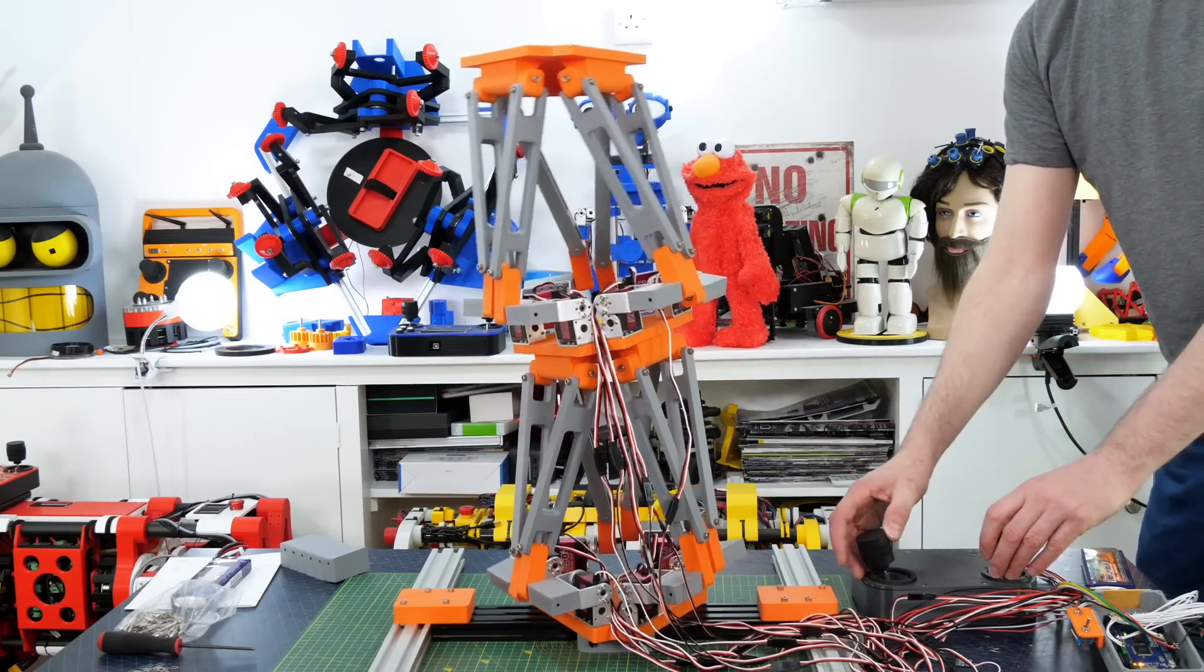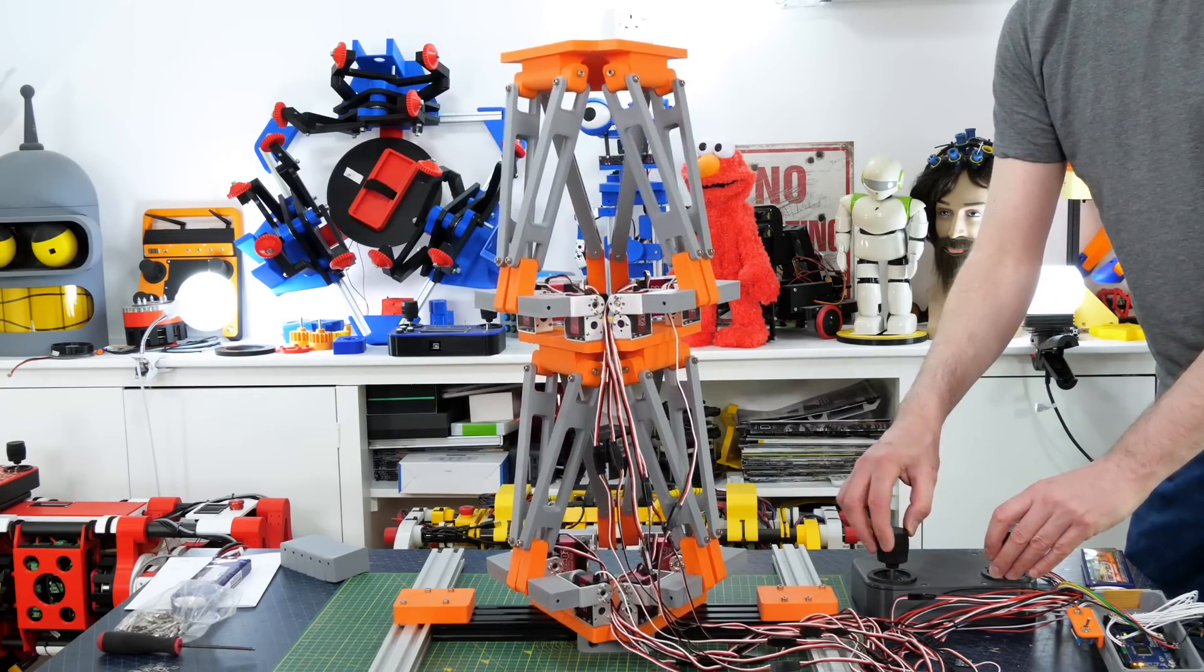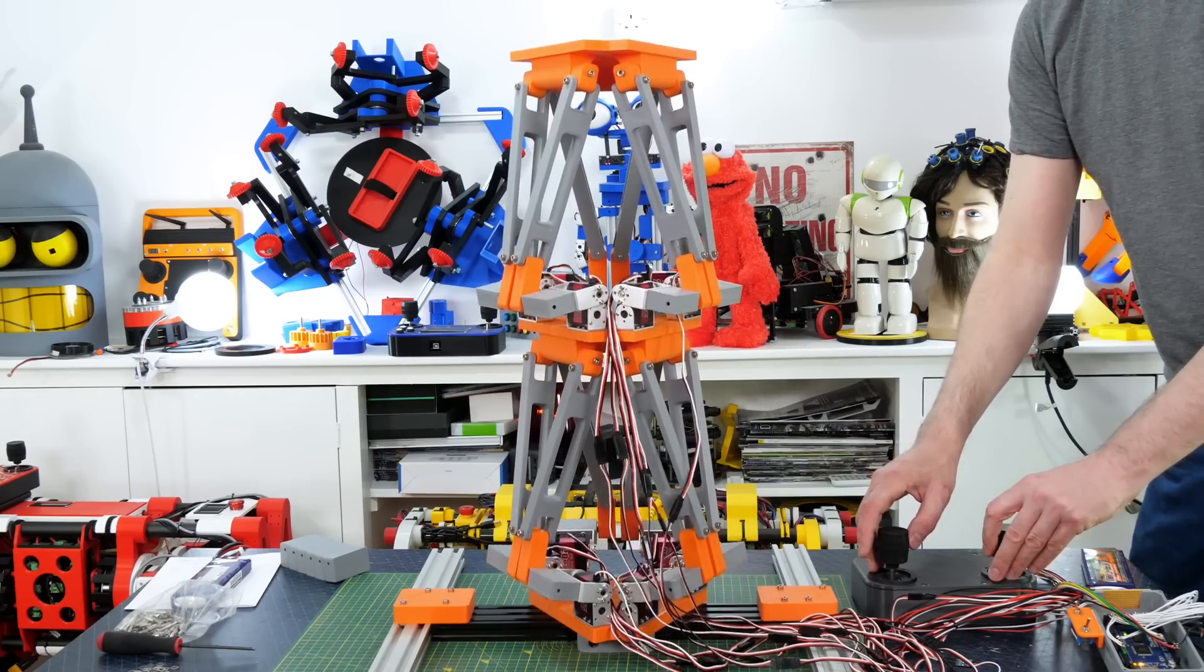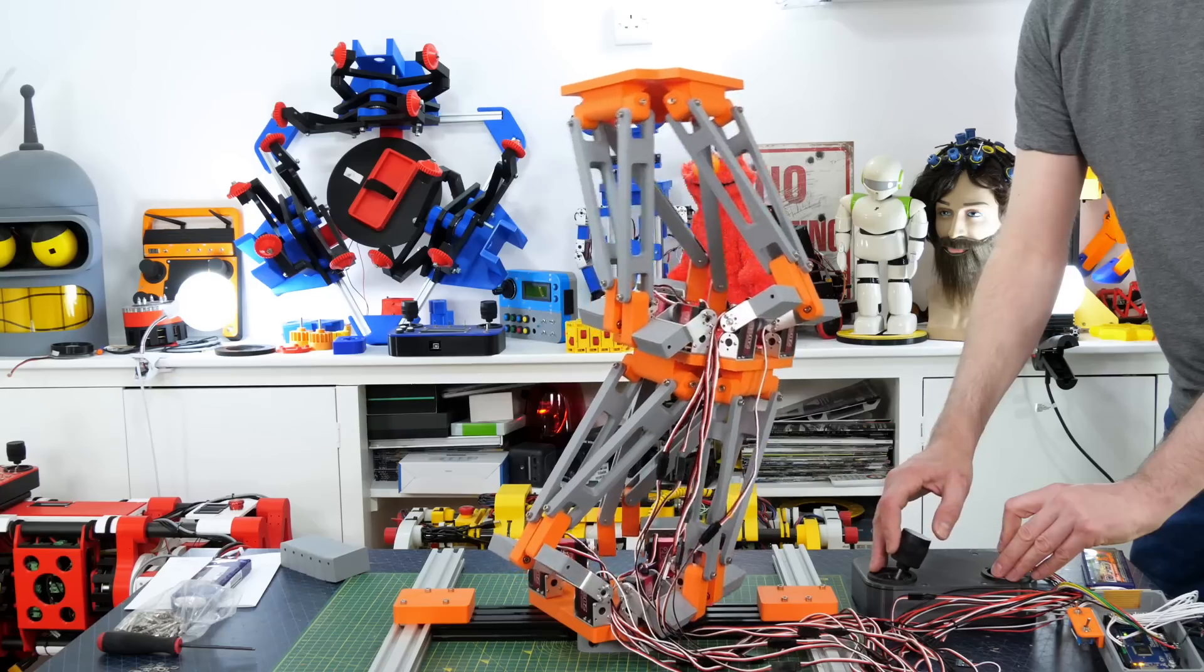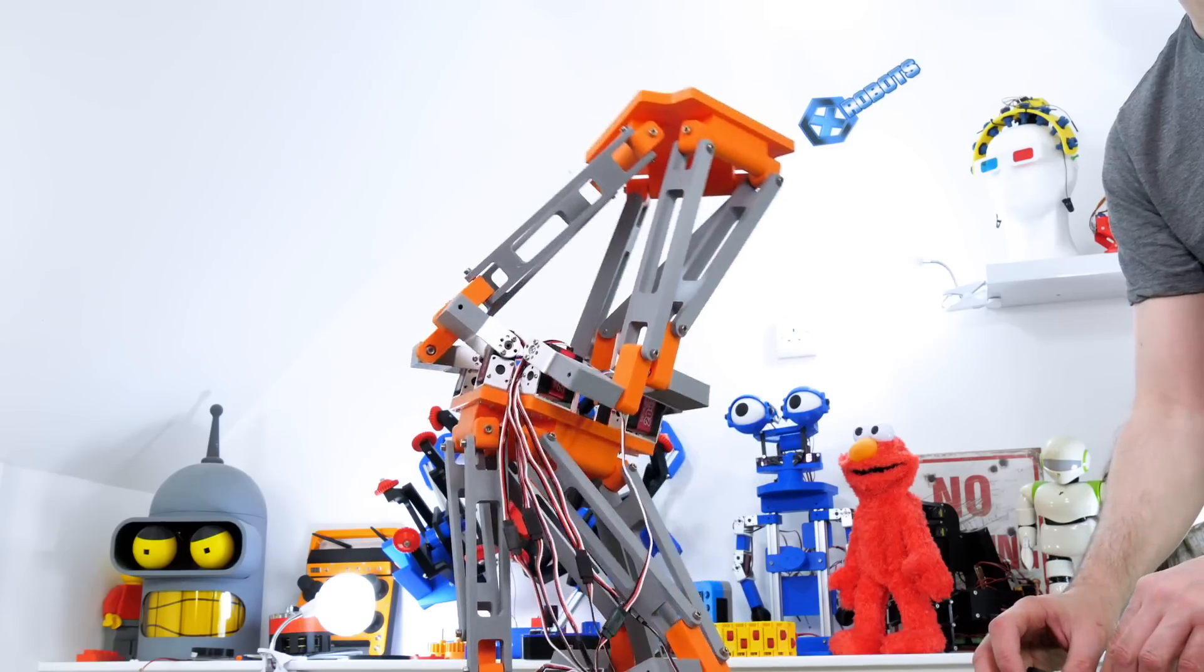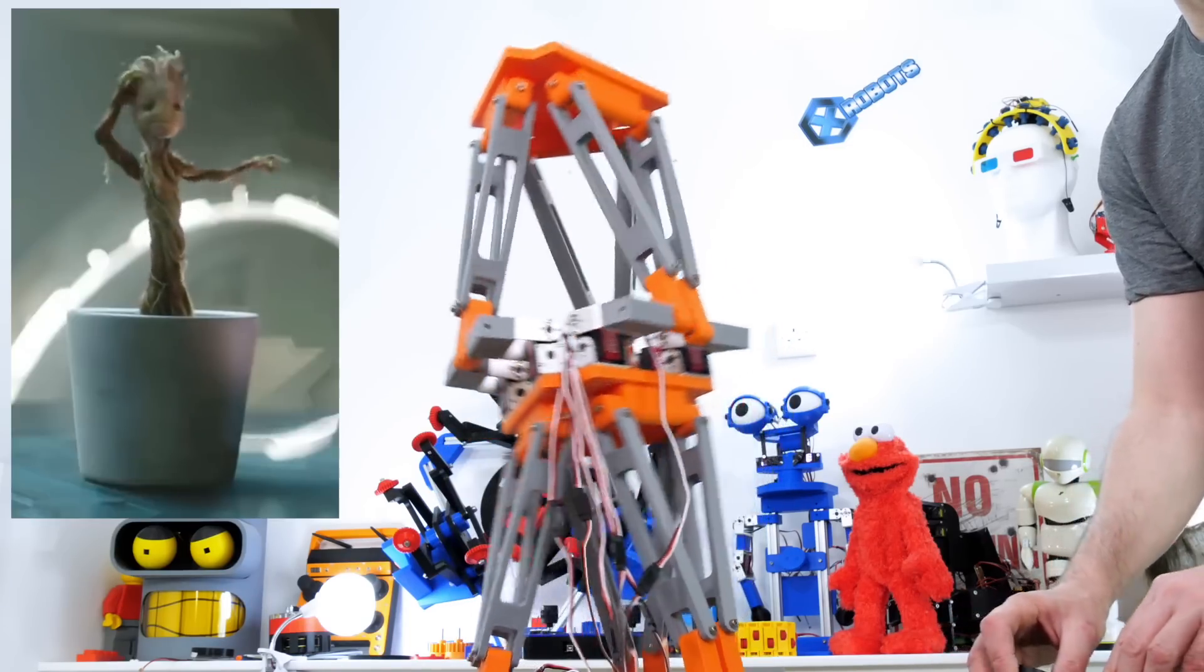I've now switched over so that the two sections move in opposite directions, so that means the heave control will move both sections in opposite directions and the top platform should stay nearly still. It also means if I do translation or rotation moves then they should bend in opposite directions and that means we can get some quite interesting moves. It looks quite organic, a bit like a dancing Groot.